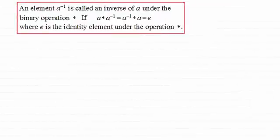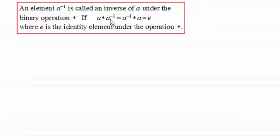In this video I want to talk about inverse elements. If we take an element a and under a binary operation star, if you combine it with a particular element — which we'll call a to the minus 1 — and you combine it with a the other way around, you get back e, the identity element for the operation star. Then a to the minus 1 is called the inverse of a. The inverse of an element always brings you back to the identity.